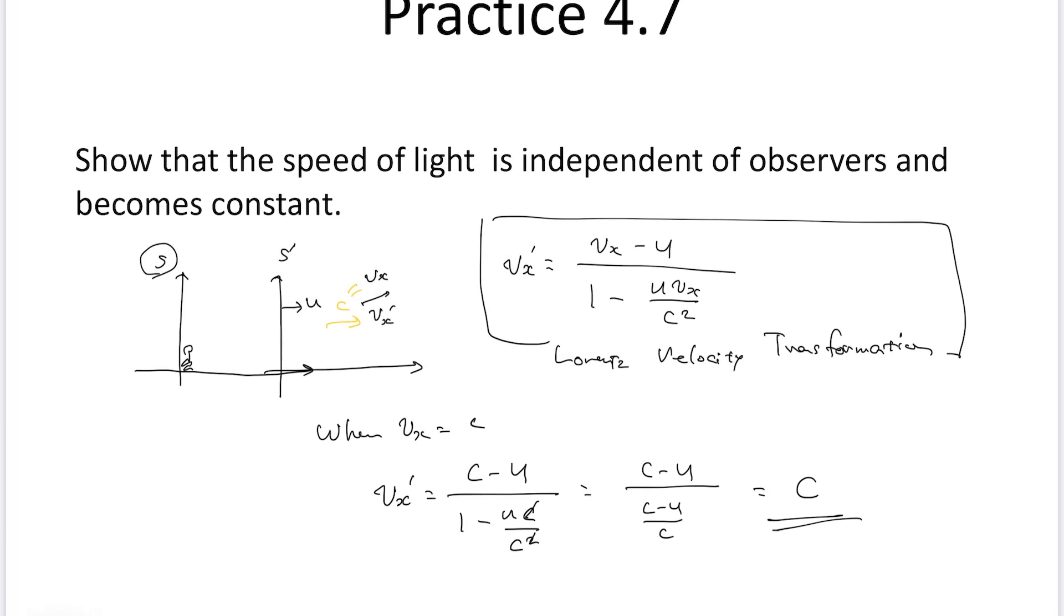So speed of light is independent of observers. This is the answer to this practice.